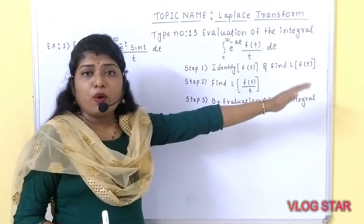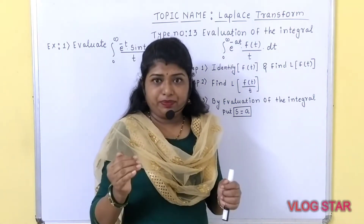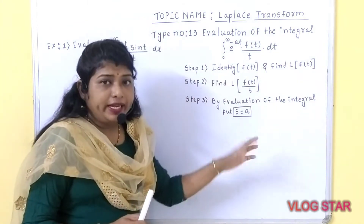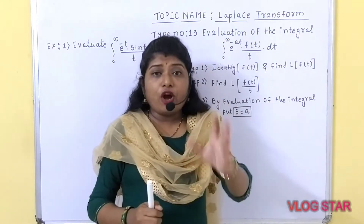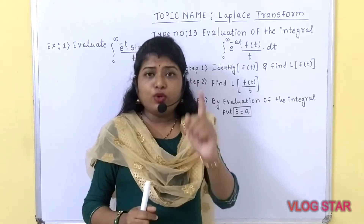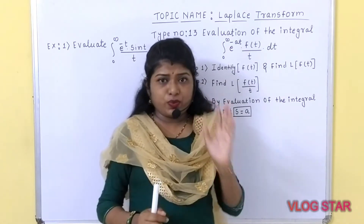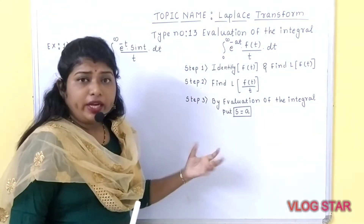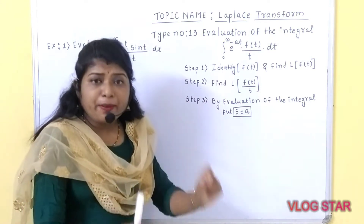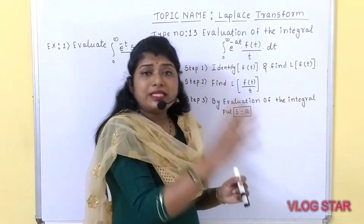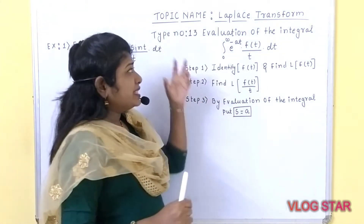Once you have done with step number 1, what is step number 2? You have to find Laplace of f of t by t, which is related to the effect of division by t. We have already studied how to solve problems based on effect of division by t in the last lecture. And step number 3 is: by evaluation of integral, whatever answer you get after step number 2, you simply substitute s is equal to a.